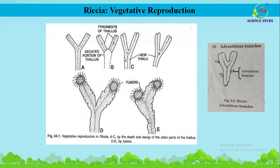The first method is fragmentation, which is the most common method of vegetative reproduction. The cells of older parts of the plant die due to old age. Here you can see the decayed portion of the thallus. When death and disintegration of the old part reaches the dichotomy, the lobes of the plant get separated, and each fragment later develops into a new thallus of Riccia.